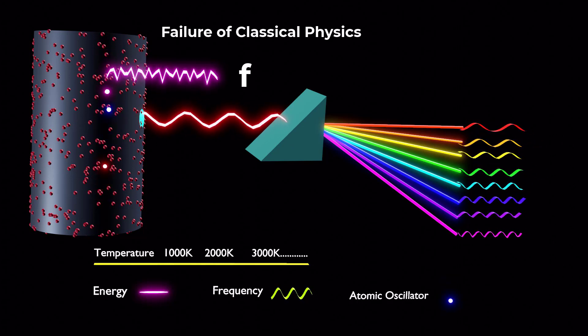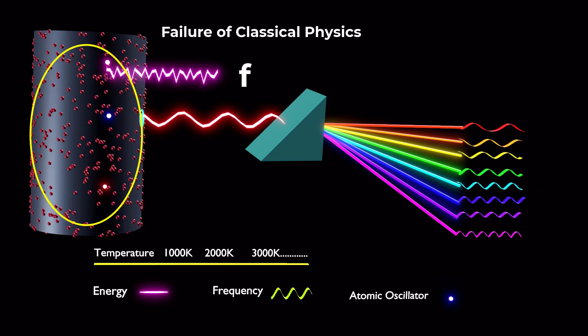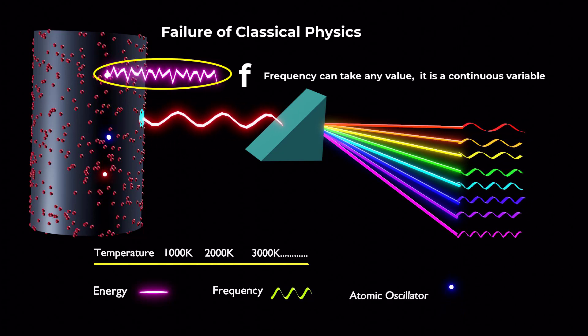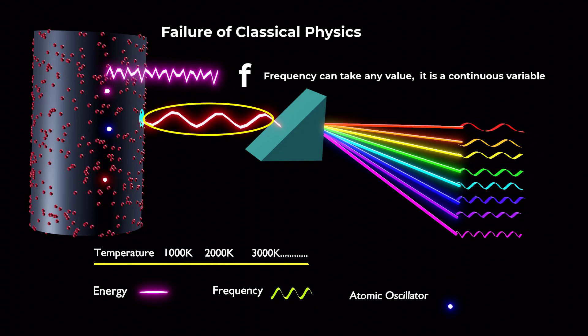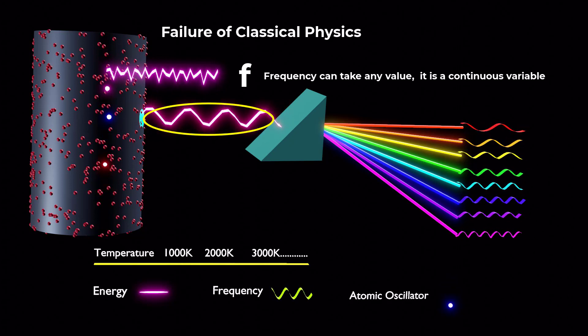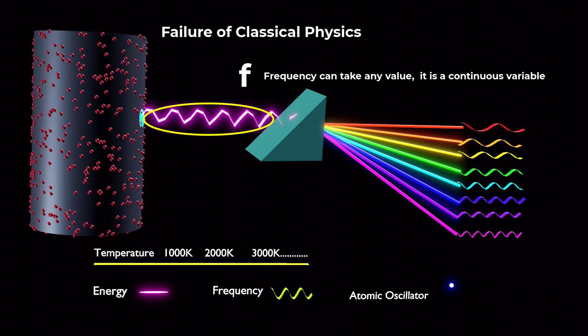Since a body is made up of countless oscillators, it emits radiation of all possible frequencies, ranging from very few vibrations per second to a significantly high number of vibrations per second.